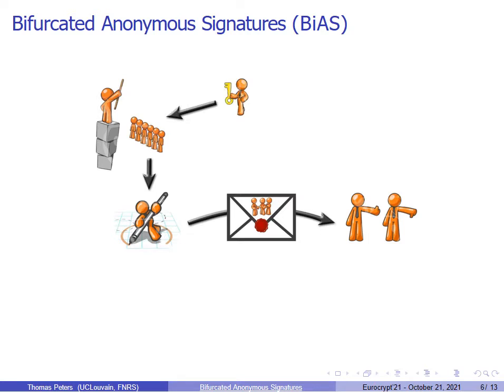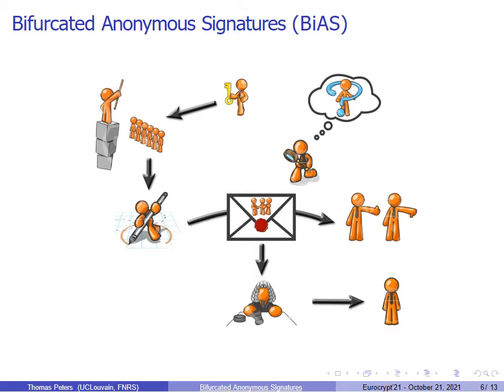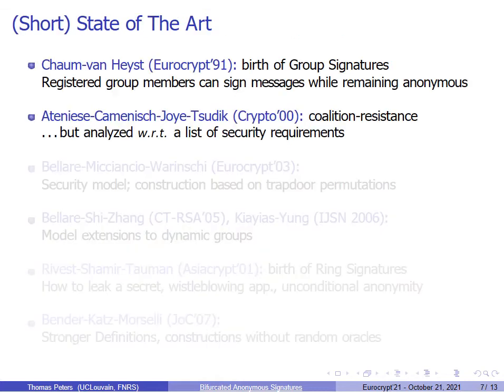This process is actually dynamic. A new user can come and join the group by first creating a secret, usually a signing key, and will get the credential, usually a group manager's signature on the user verification key. Traceable or not, any signature computed by a group member is at least computationally anonymous from the outside. The opening authority can try to identify the actual signer behind any signature. If it does not find any identity, that means the signature is statistically anonymous; otherwise, it should always find one identity. Basically, a bifurcated anonymous signature is a flexible mix of ring and group signatures.